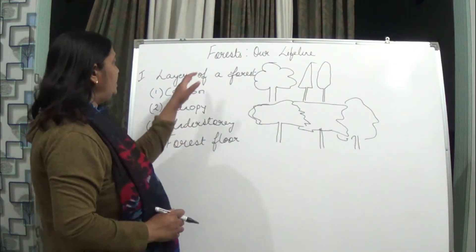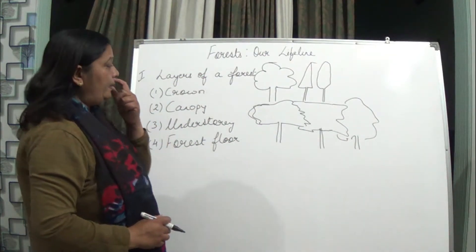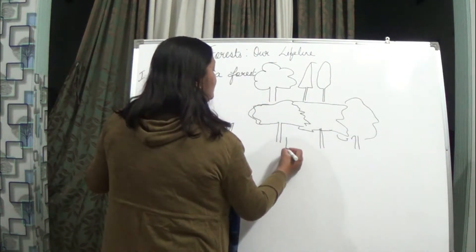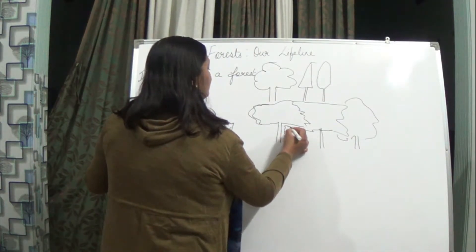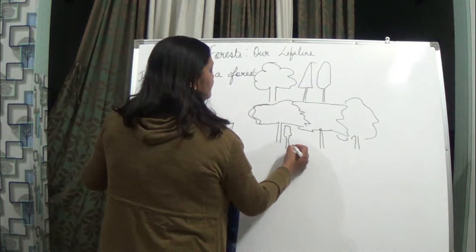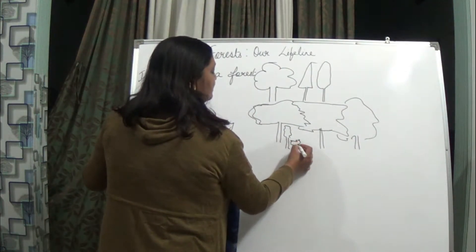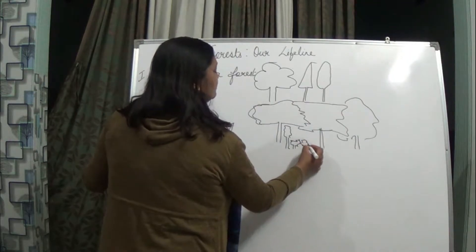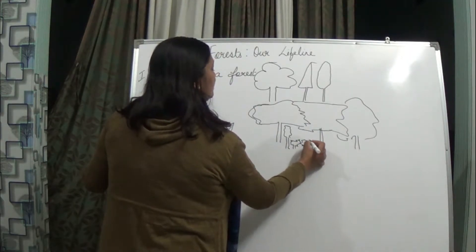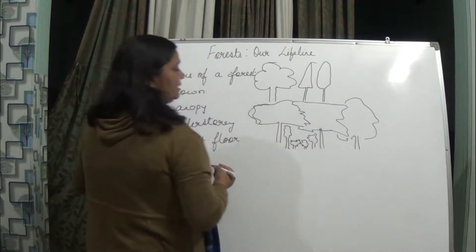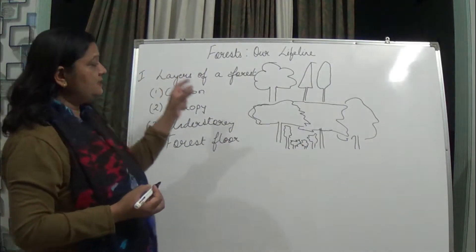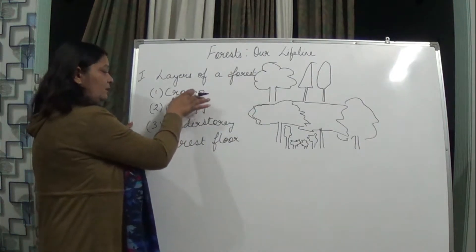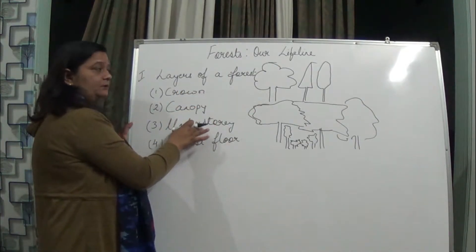The understory layer of the forest consists of herbs and shrubs, which form another layer — that is the understory. So we have the crown, the canopy, and the understory.